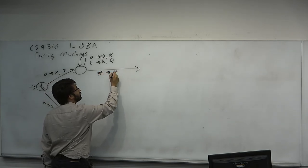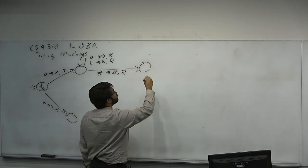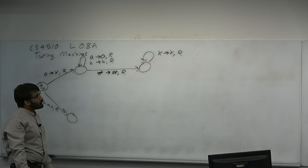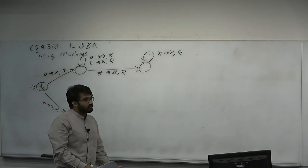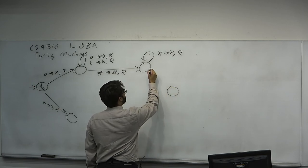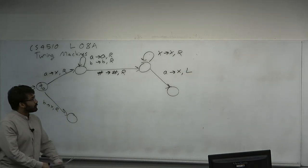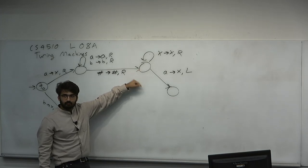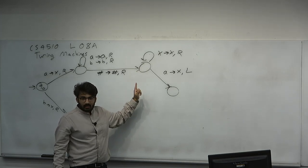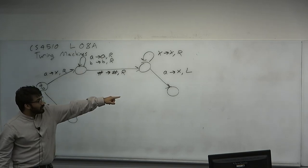From the state where we remembered A: we self-loop reading A (write A, move right) and reading B (write B, move right) — this means 'keep going.' We stop when we see the hash: write hash back, move right. Then loop past marked symbols (X's): read X, write X, move right. Then when we see the first unmarked symbol, we hope it's an A — mark it with X and move left.